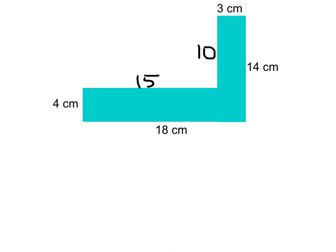Now I get to draw a horizontal or vertical dividing line. However, I need to be careful where I draw it, because drawing it in the wrong place won't divide the figure into rectangles and squares. It doesn't matter whether I draw a horizontal or vertical dividing line — I'll still end up with the same area as long as I compute things correctly. I drew a horizontal dividing line this time.